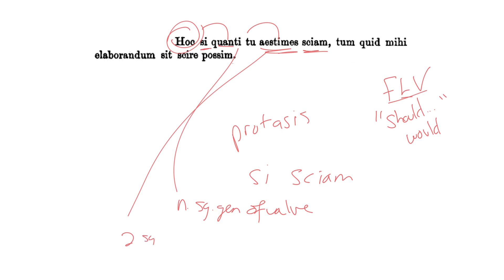Aestimes is a second singular present subjunctive active. The first principal part of this verb is aestimo, and the second is aestimare, so we know it's first conjugation. The E tells us that it is a subjunctive. So if I should know how much you value this thing, hoc,